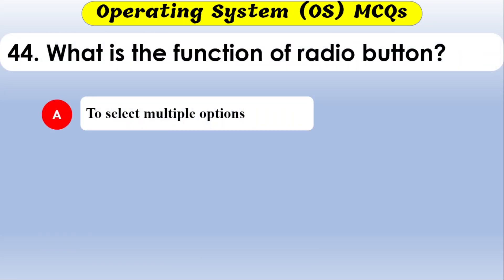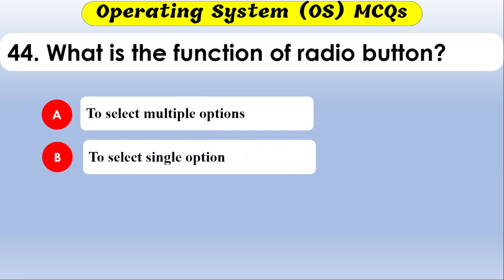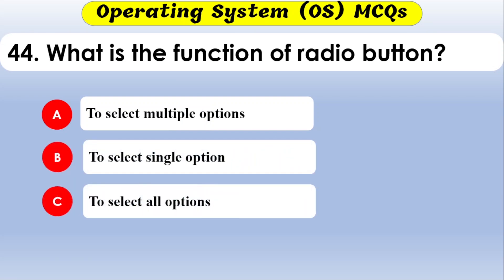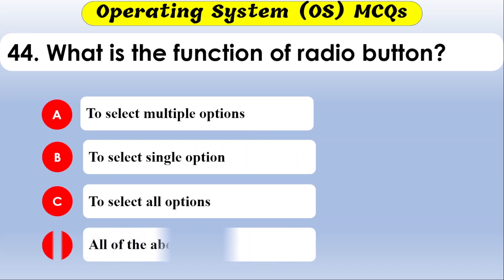What is the function of a radio button? The options are to select multiple options, to select a single option, to select all options, or to supply options. The correct option is to select a single option.